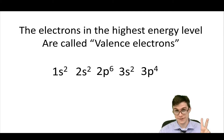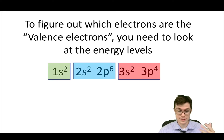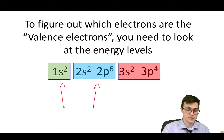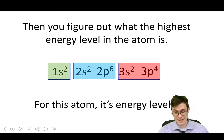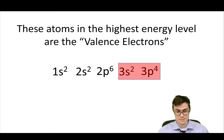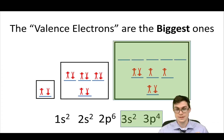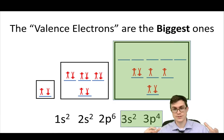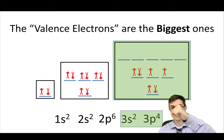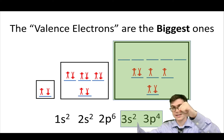Now the electrons on the highest energy level are called valence electrons — they're going to be really important. If you have a configuration and want to know what the valence electrons are, you just look at the energy levels. These are in energy level one, these are in two, these are in three. The highest energy level contains the valence electrons, so for sulfur, energy level three electrons are the valence electrons. In the apartment complex visual, the people who live in the biggest building are the valence electrons. They have the biggest electron probability waves, so they're the farthest away from the nucleus.